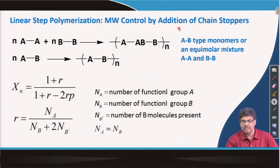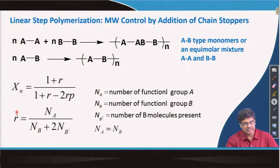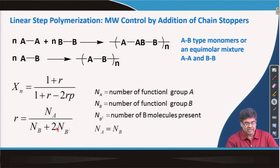There is another way to control molecular weight: by addition of a chain stopper. We considered two monomers in equal ratio — AB type monomer or an equal mixture of AA and BB type — but in that case R is defined differently as N_A divided by (N_B + 2N_B'), where N_B' is the number of monofunctional B molecules present. The factor of 2 arises because one single monofunctional monomer has a similar effect to one excess difunctional monomer.